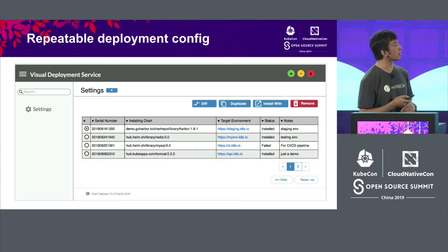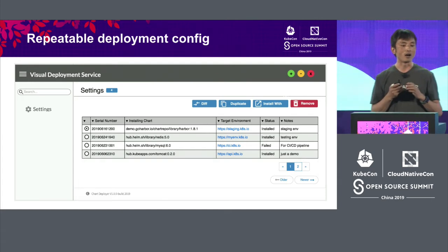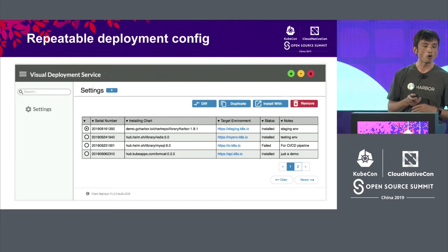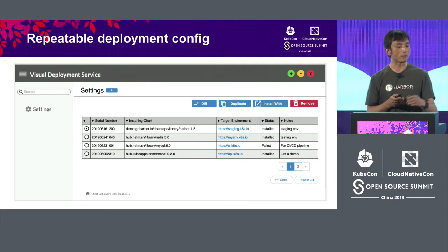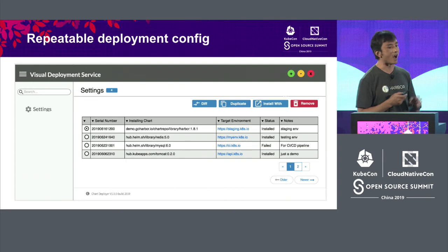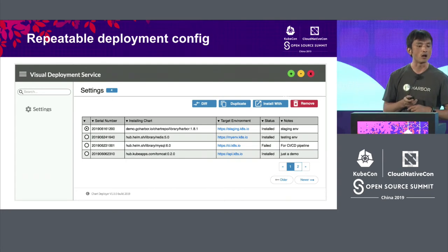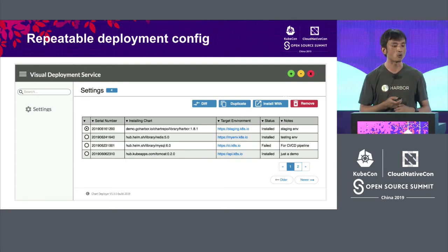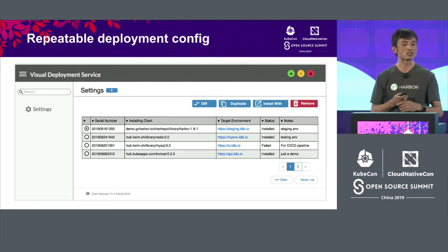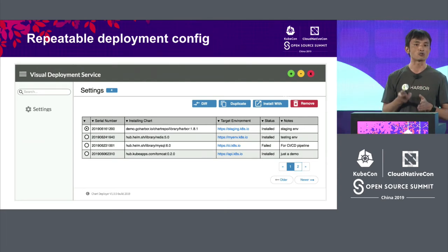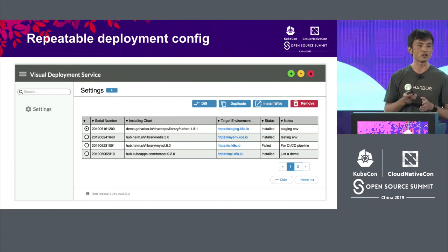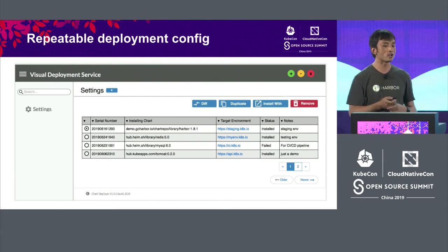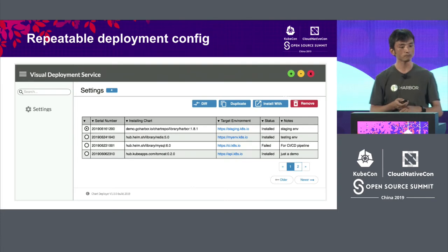We also mentioned that deployment configurations can be persistent, and also for review. You can do that based on different versions, and it will help you to review all of the configuration items. You can do the diff between two versions, and based on the existing ones, generate a new option of configuration. You can reinstall based on the current values in your chart.